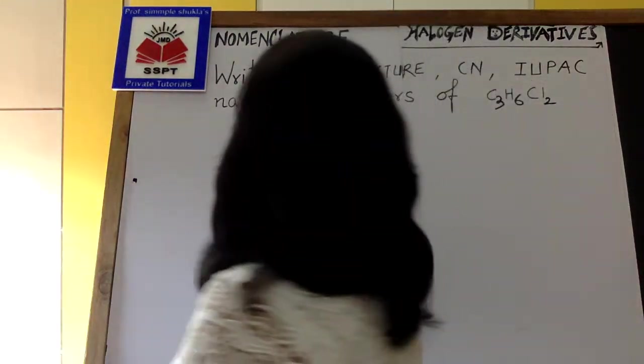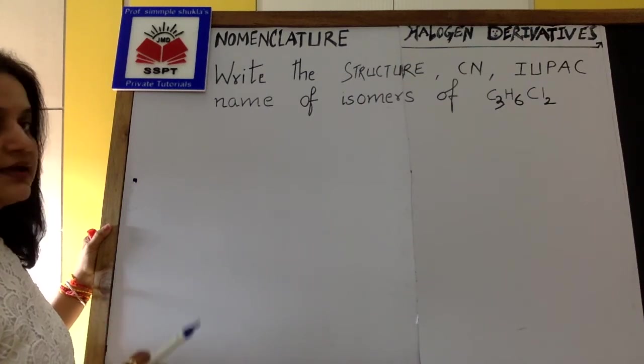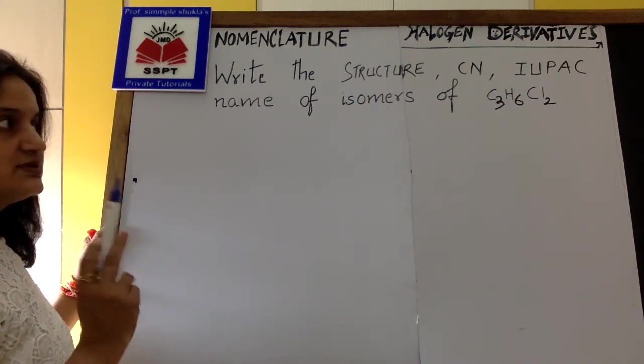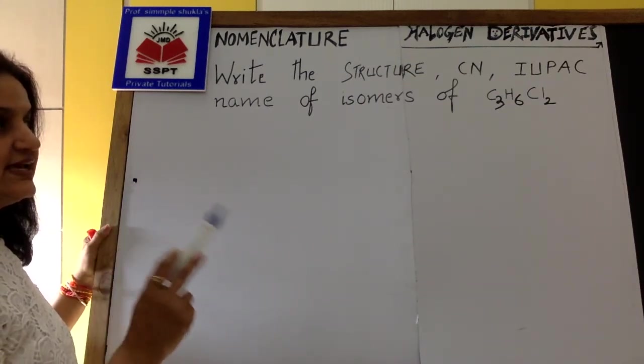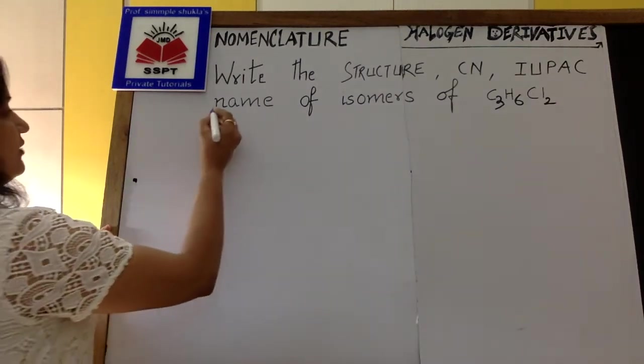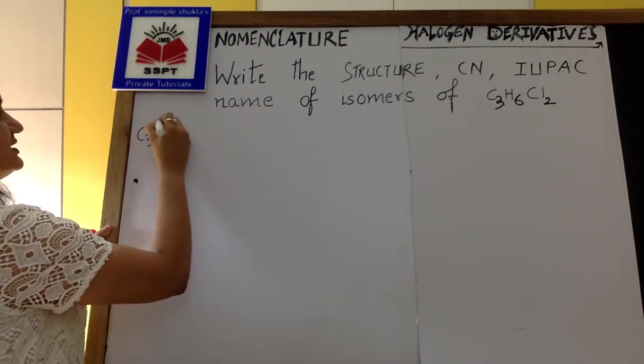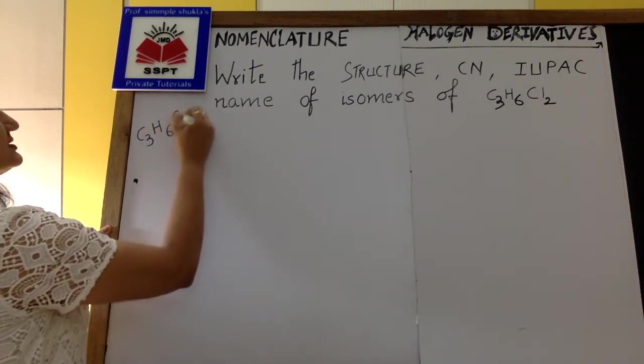Let us see the question. Write the structure, common name, IUPAC name of isomers of C3H6Cl2. First thing which we should know is C3H6Cl2.